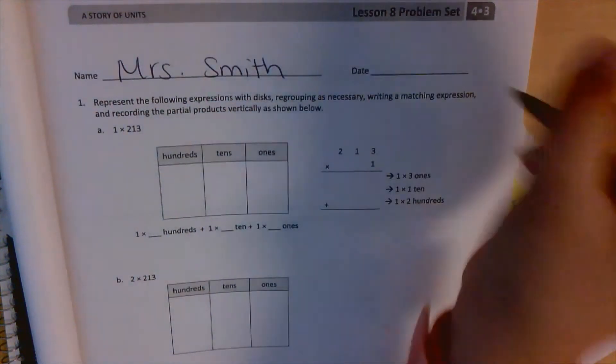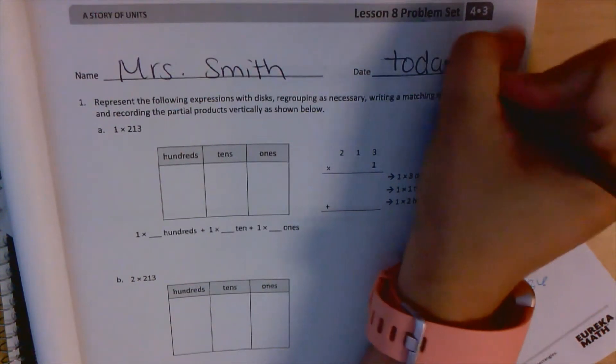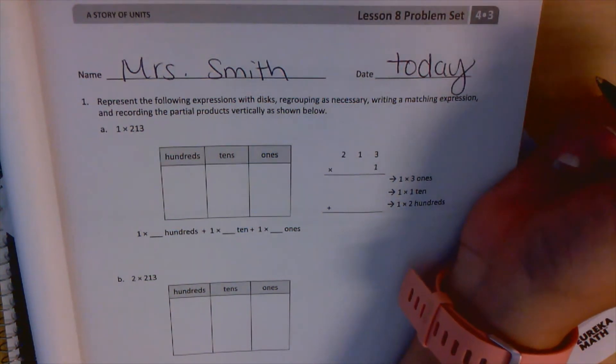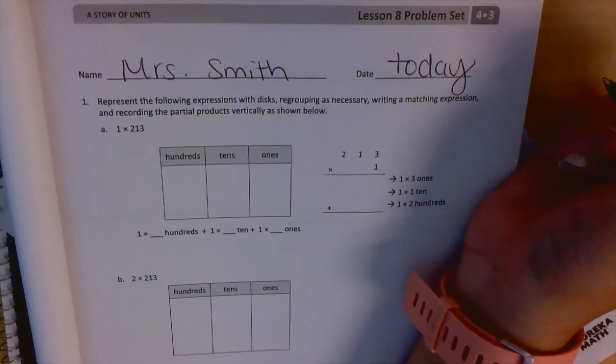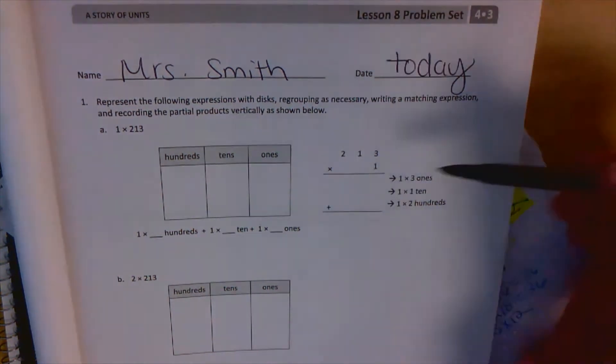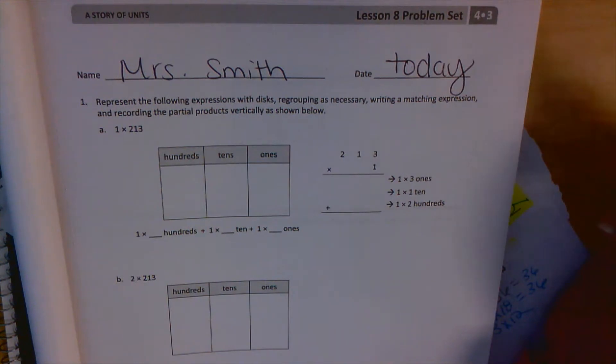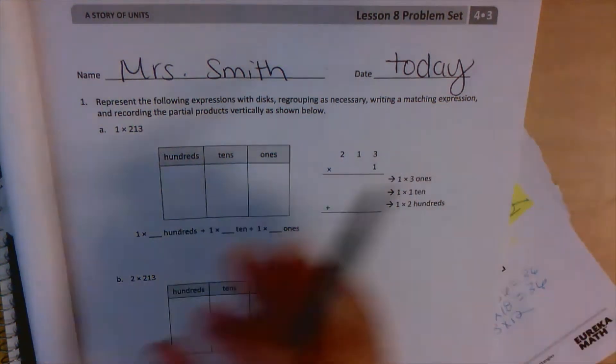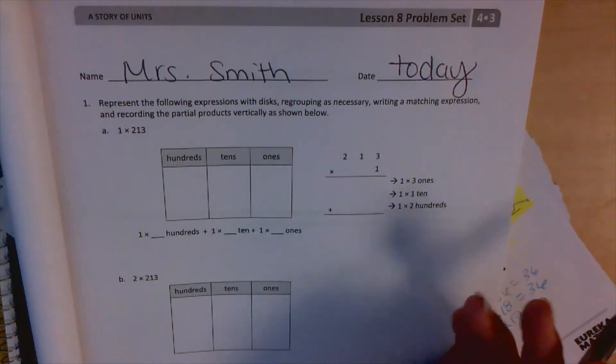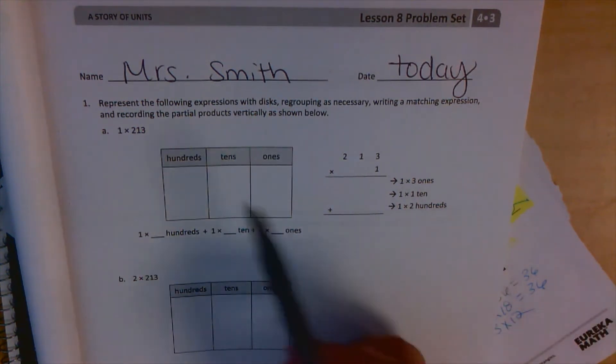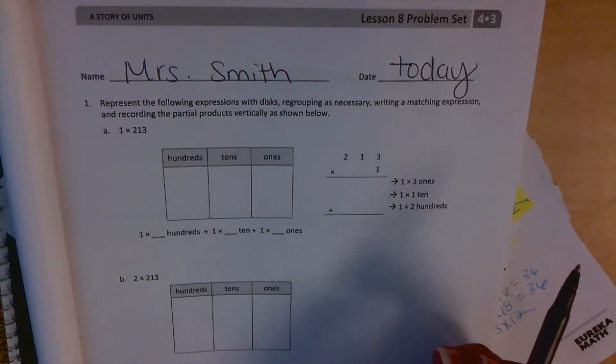Let's get started on Lesson 8 Problem Set. We're still going to represent the following expressions with disks, regrouping when necessary. We're going to write an expression that matches the problem, and then record the partial products vertically. This is an extension of Lesson 7 Problem Set, but now we have a three-digit number times a single-digit number.